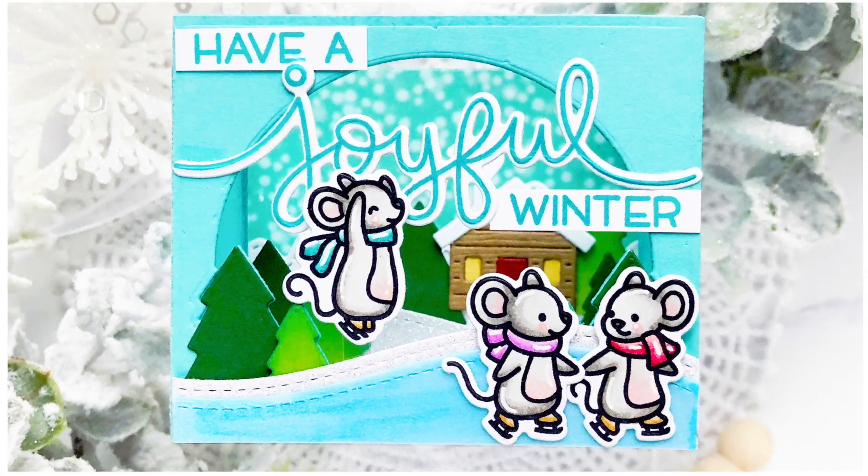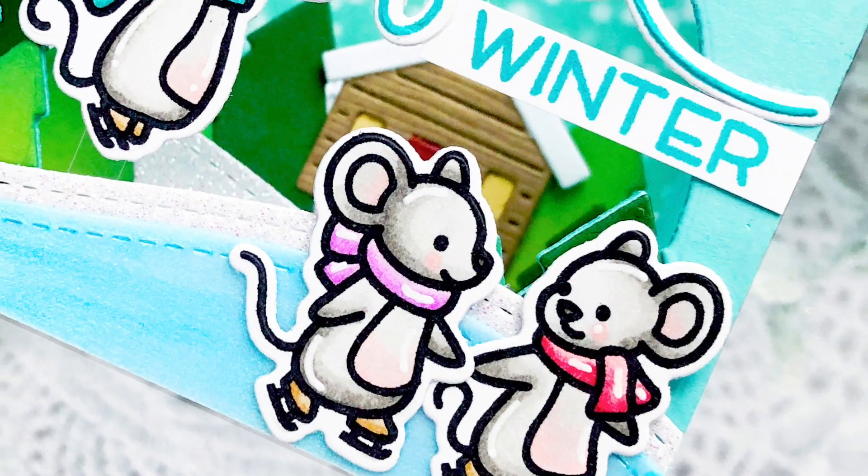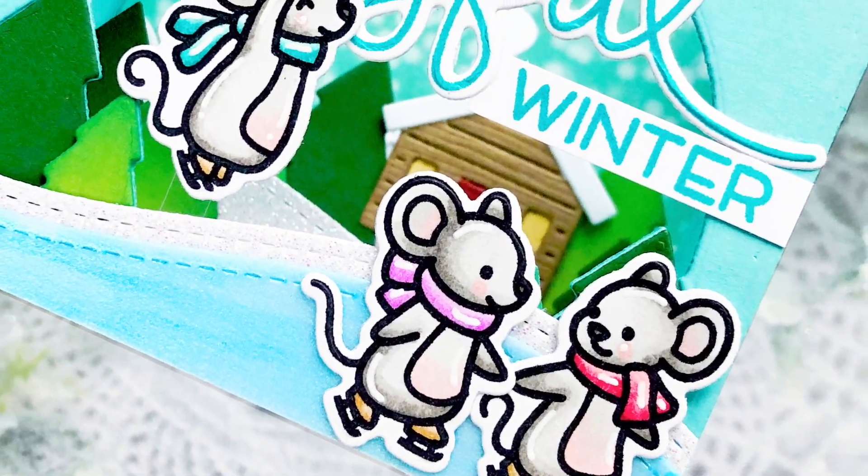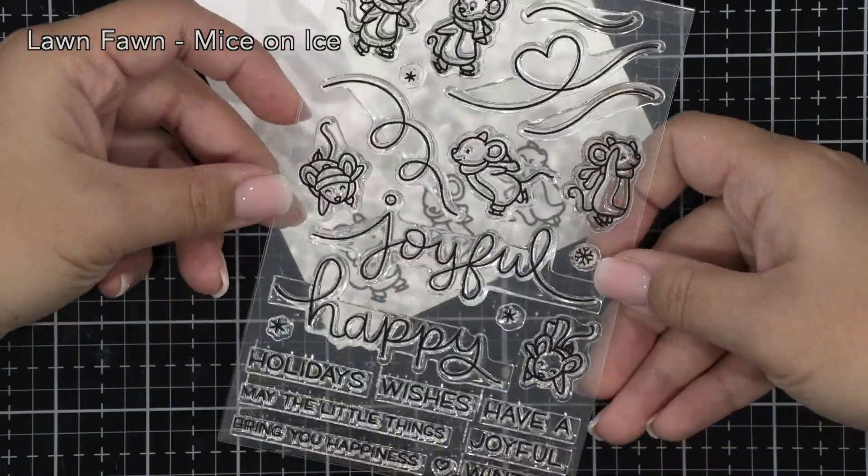Hi friends, this is Kali Person. Thanks so much for joining me today. I've made a shadow box card using the Mice on Ice stamp set by Lawn Fawn, and I just wanted to share with you how I constructed my shadow box card today.